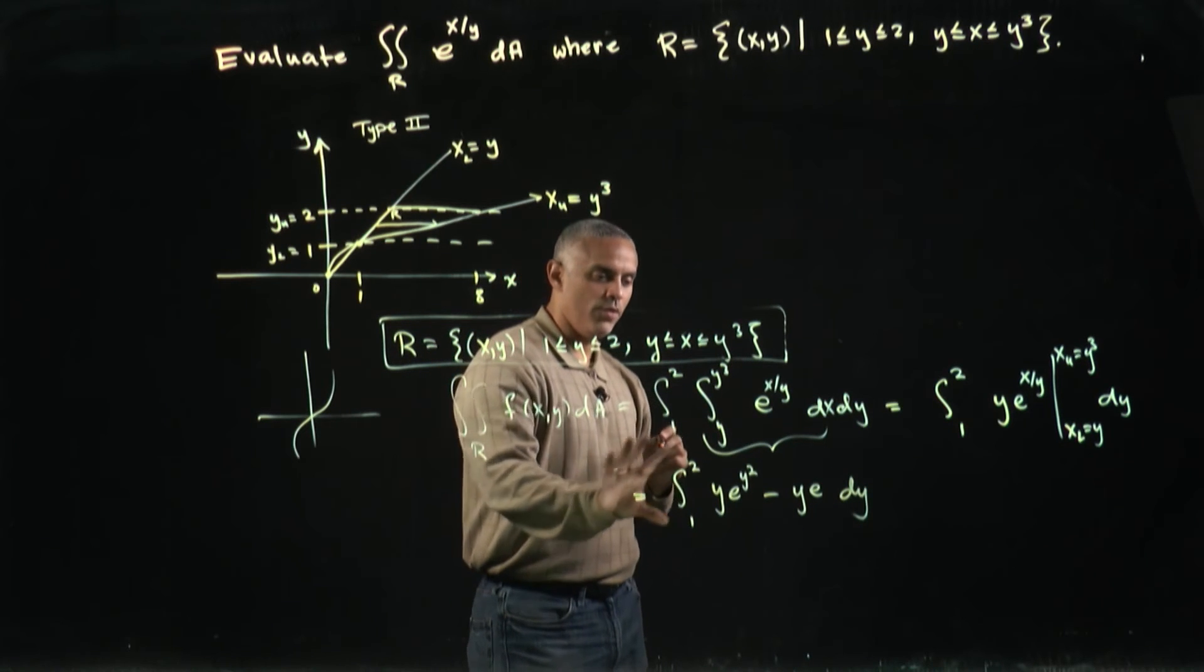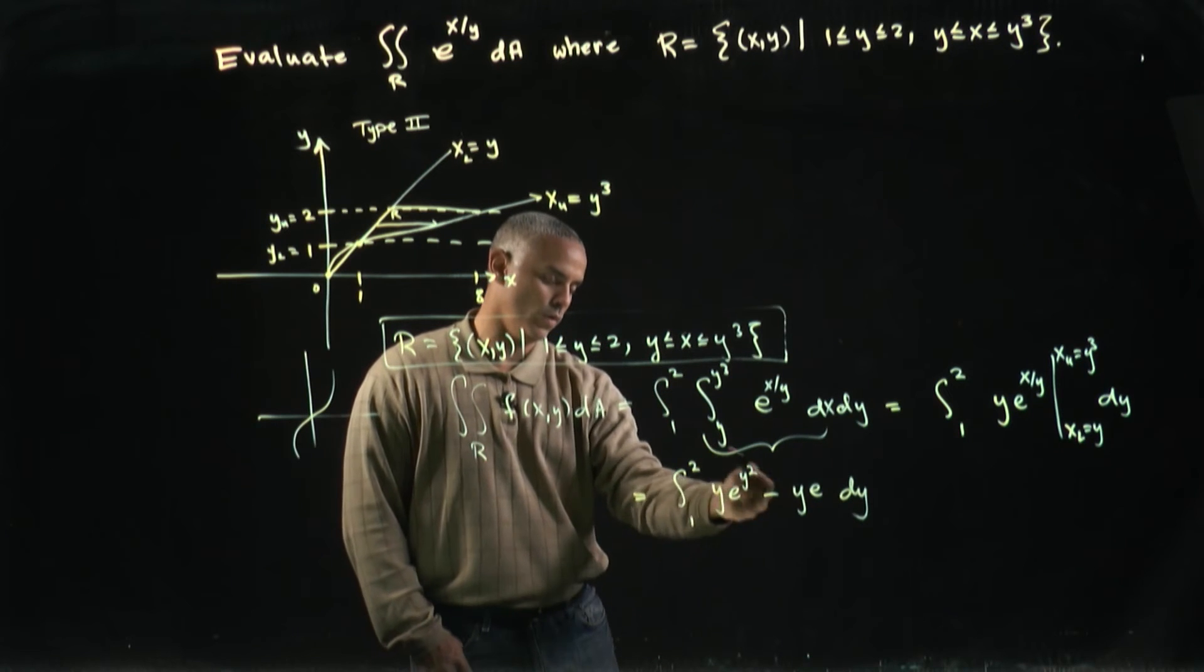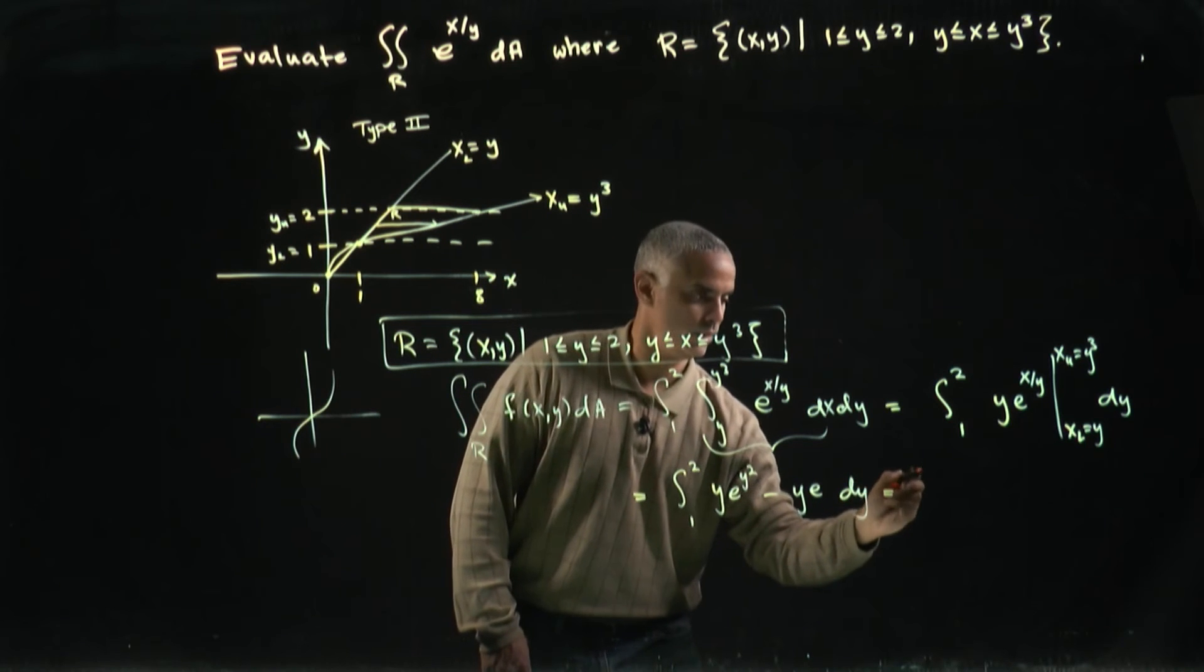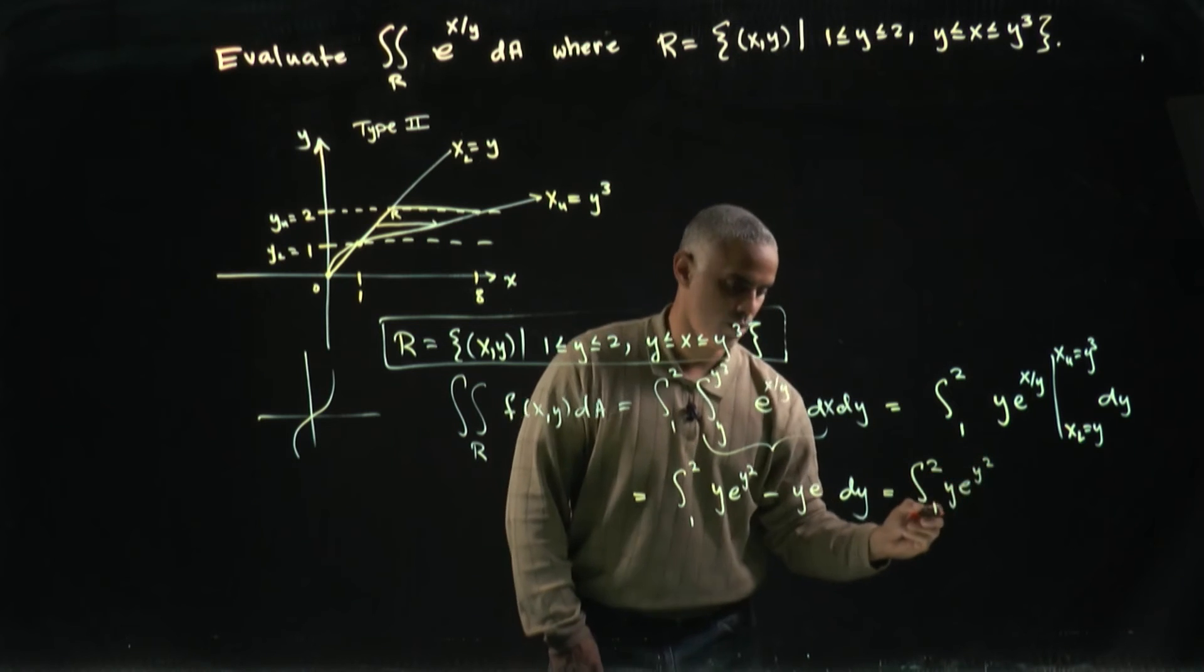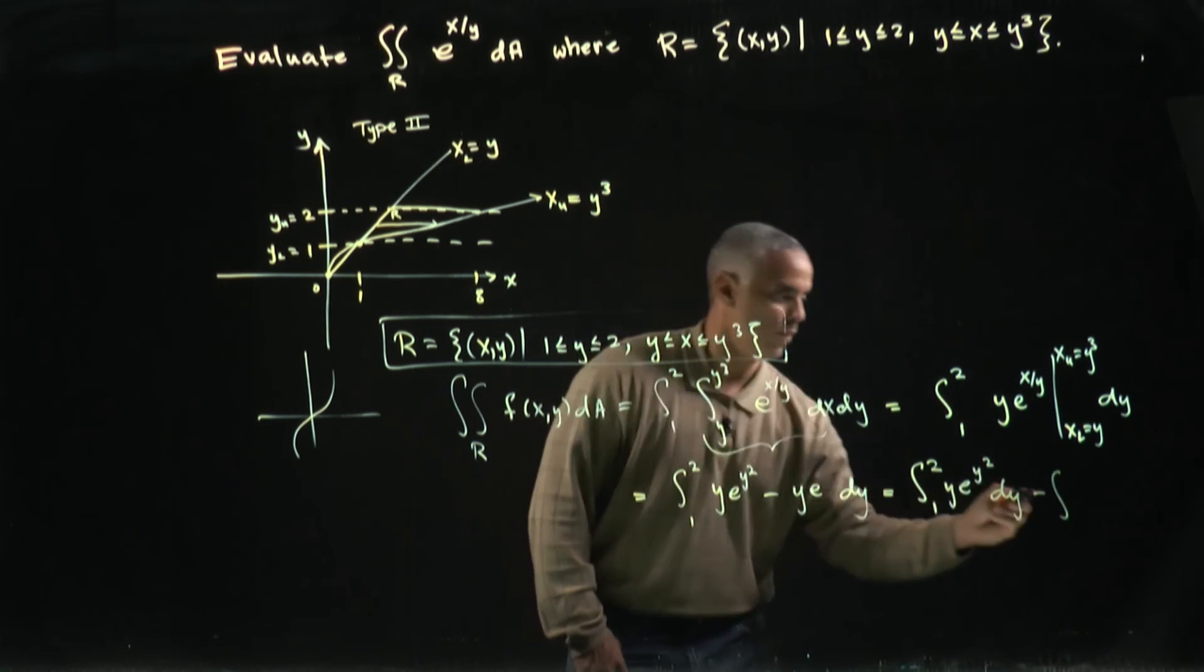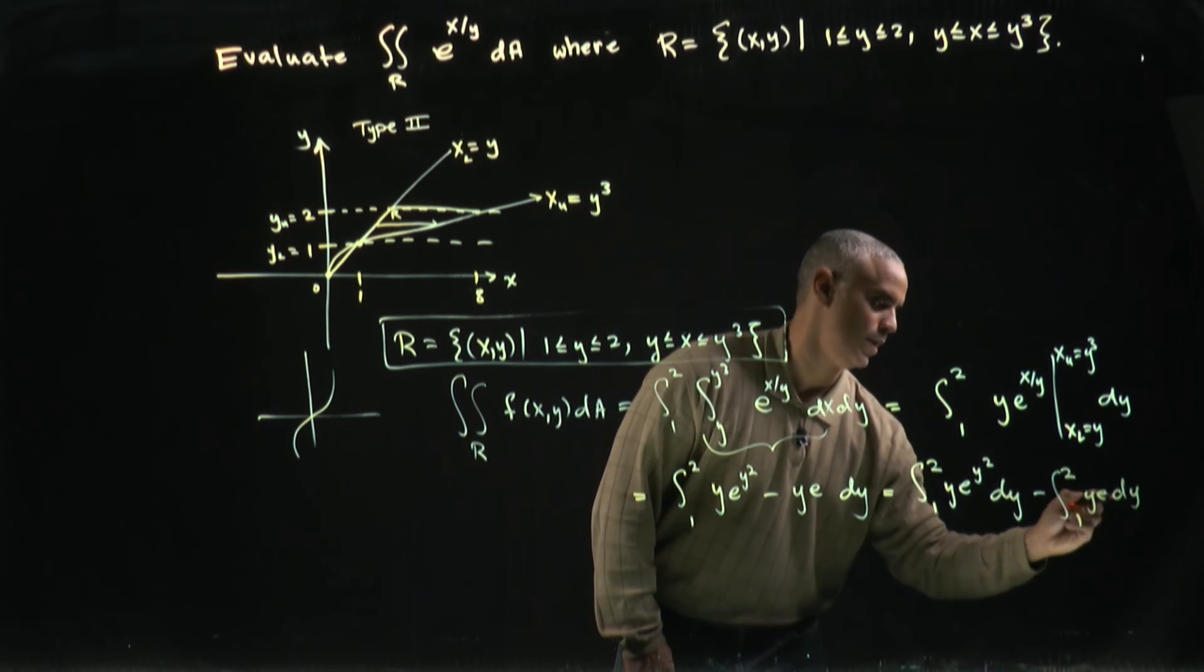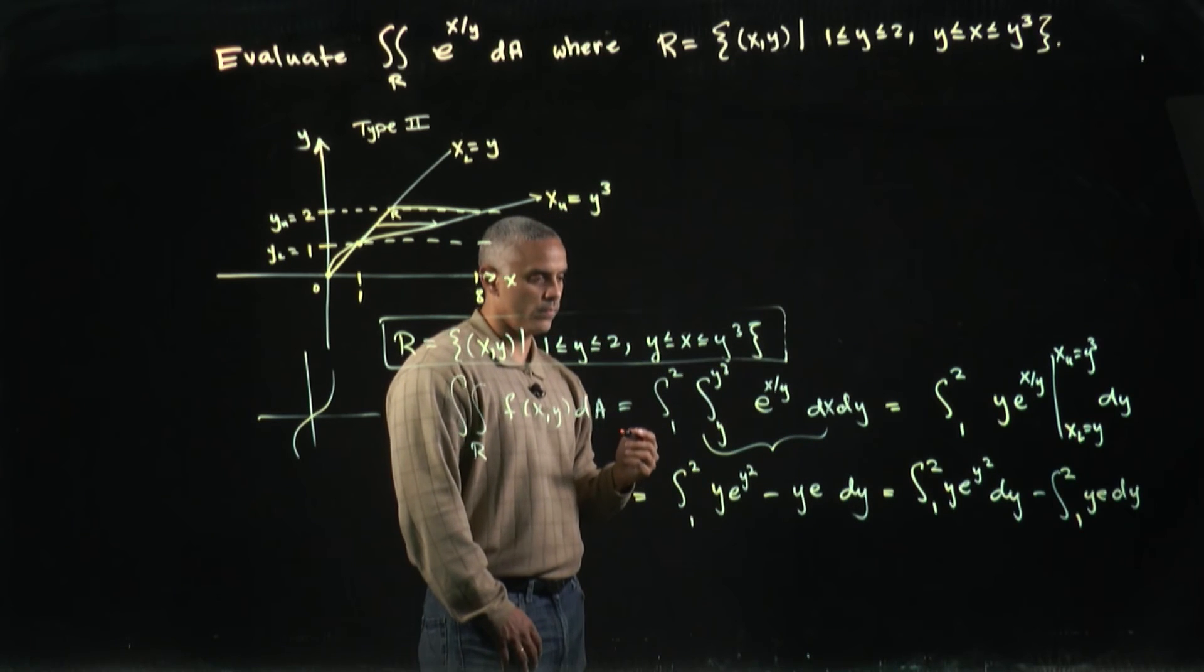And so, I'll go ahead and write the integral across both the terms, because I want to do something different with the first term than what I'll do with the second. So, I'll write this as the integral from one to two y e to the y squared dy, minus the integral from one to two of y e dy. Remember, e is just a constant, so I could pull it out of the integral.